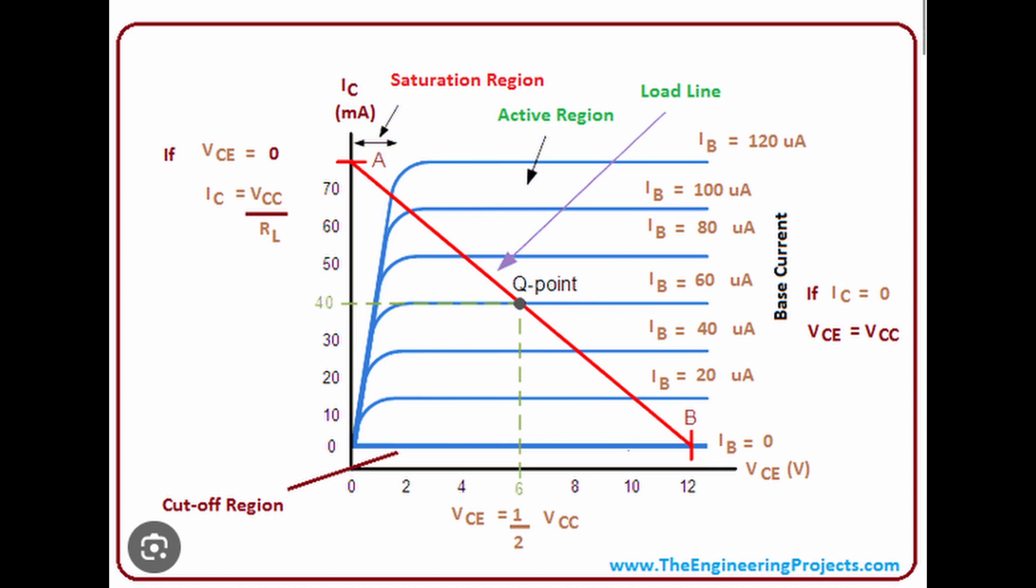You can see there's different steps. On the vertical axis, of course, is the collector current, and then on the bottom we have our voltage between the collector and emitter. With these load or characteristic curves you can actually do a couple things.